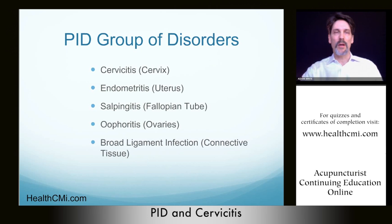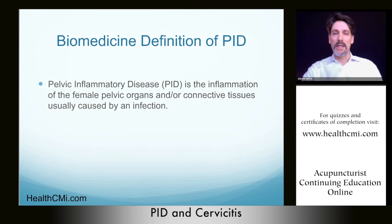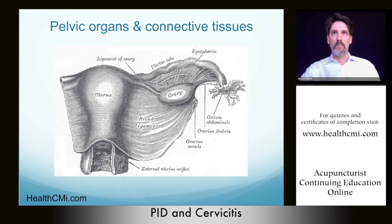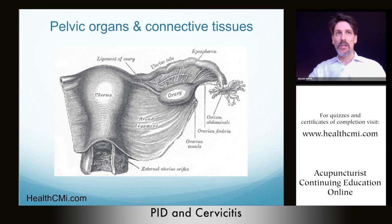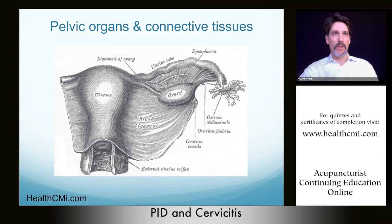PID is a group of disorders: cervicitis, which is cervical inflammation; endometritis, which is uterine inflammation; salpingitis, fallopian tube inflammation; oophiritis, which is ovarian inflammation; and the broad ligaments can also be affected. PID is the inflammation of the female pelvic organs and/or connective tissues usually caused by an infection. Sometimes infections can lodge in the broad ligaments — it's not just in the reproductive organs themselves, but also the surrounding connective tissue.